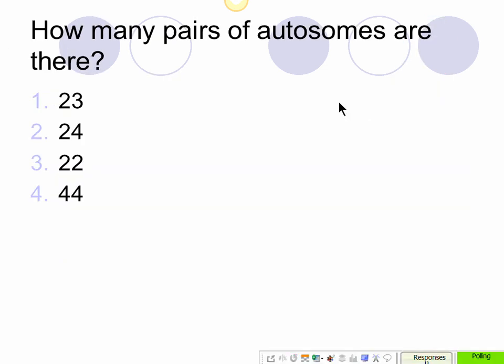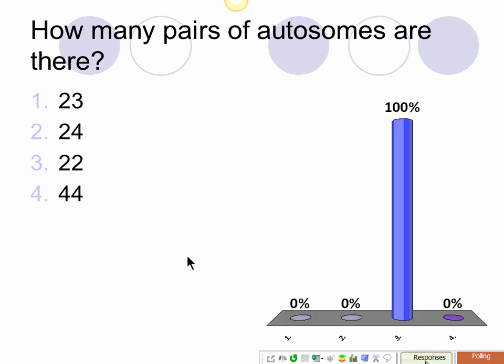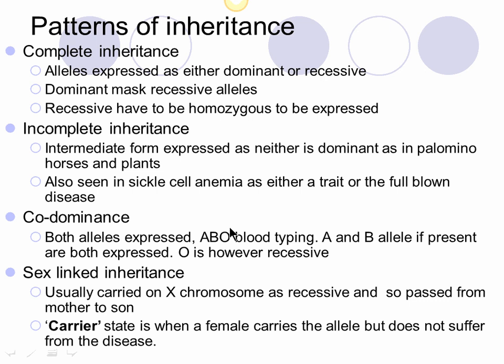There are 22 pairs of autosomes. Now let's look at some patterns of inheritance. What I was describing — dominant and recessive, uppercase for dominant and lowercase for recessive — is known as complete dominance, where it's very black and white. The dominant allele will always mask the recessive allele. In order for the recessive allele to be expressed, it has to be in homozygous recessive form.